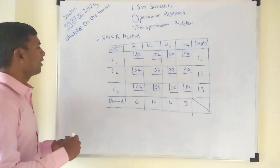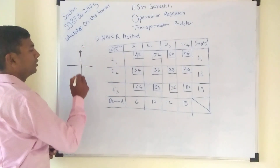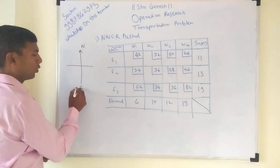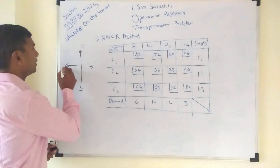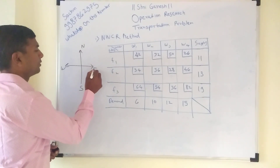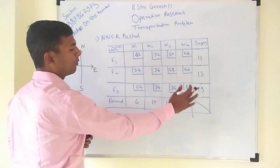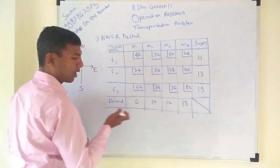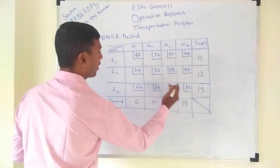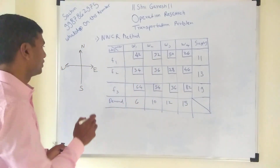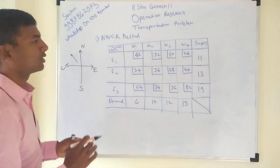North-West Corner — when we look at the problem, we have an idea that the upper side is the North, lower side is the South, this is West and this is East. So try to think of the given problem as having North, South, West, and East directions. The corner we are looking for is the North-West corner, which we want to identify in this sum.